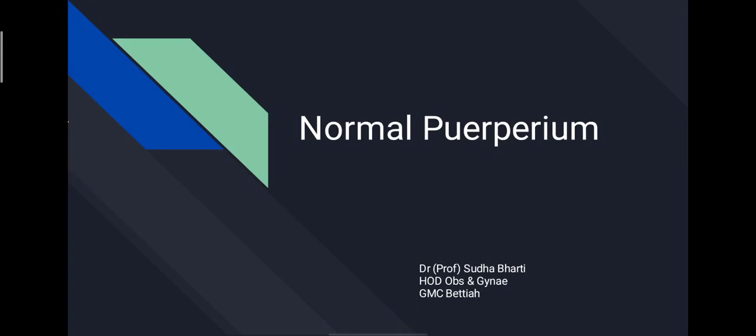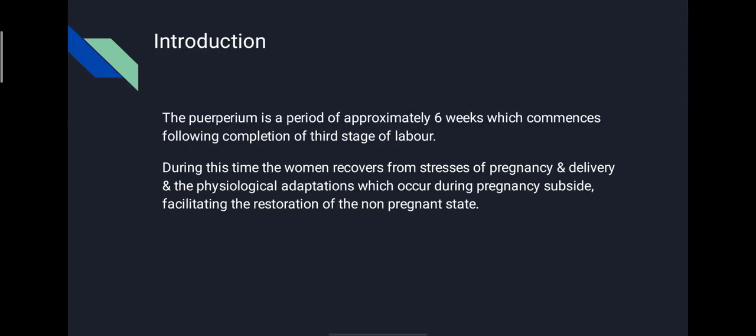Hello student, today's topic of discussion is puerperium. Puerperium is a six-week period following childbirth, during which the maternal system, especially the reproductive organs, more or less returns to a non-pregnant state. It is a period of adjustment after pregnancy and delivery, when anatomical and physiological changes of pregnancy occur. During this period, the woman recovers from the stresses of pregnancy and delivery, and physiological adaptations which occurred during pregnancy subside, facilitating the restoration of the non-pregnant state.